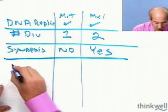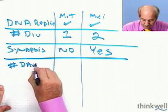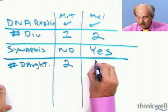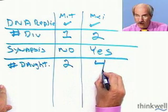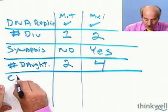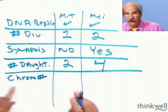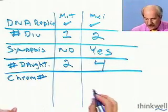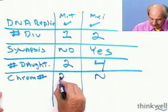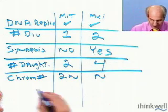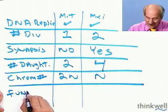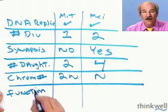The number of daughter cells. Mitosis, two. Meiosis, four. But what about the chromosome number? The chromosome number, I'm going to use n's and two n's here. In meiosis, we have the basis n, but in mitosis, we have the same number as the parent cell, two n. And last but not least, last but definitely not least, function.